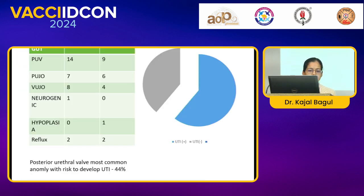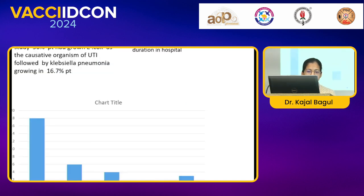In summary, posterior urethral valve is the most common anomaly found to develop UTI in congenital anomalies of children. Among micro-organisms, E. coli is the most commonly found in UTI patients with congenital anomalies.